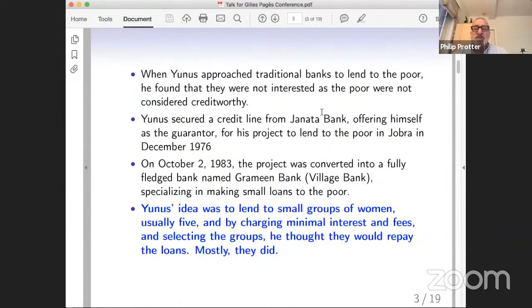Yunus approached traditional banks to lend to the poor, and he found that they weren't interested because the poor weren't credit worthy. So he did some experimenting around, and then he started a project, which in 1983, he converted into a bank, called the Grameen Bank, which translated means the village bank. It specialized in giving small loans to the poor. His idea was to give small loans to groups of women, usually five women. He would charge minimal interest and fees, and he selected groups that he thought would repay the loans. And to a huge extent, like 97%, they did.